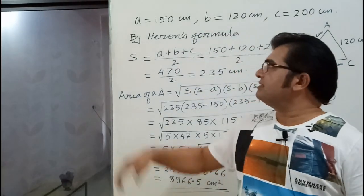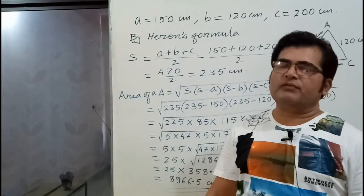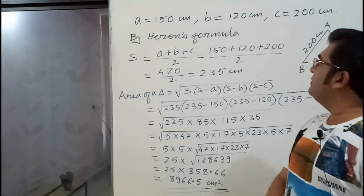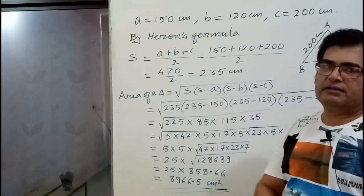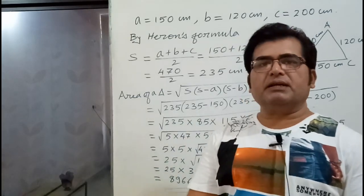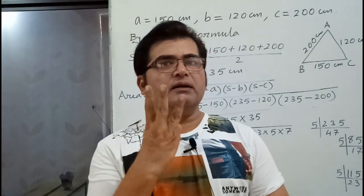The question is, the three sides of a triangle are 150 cm, 120 cm and 200 cm. Three sides of a triangle are given.